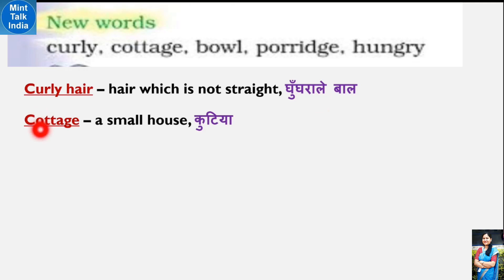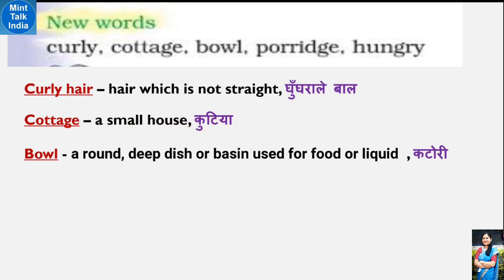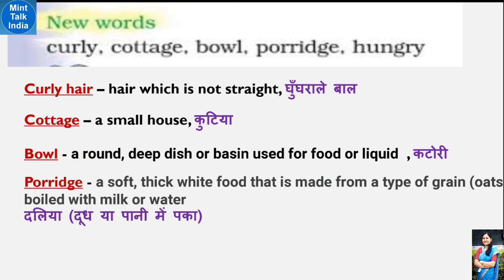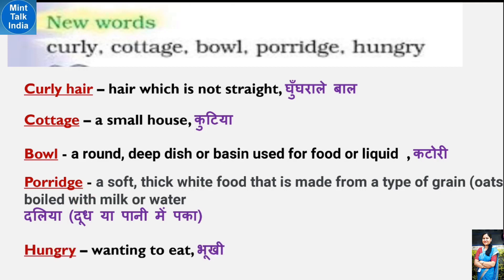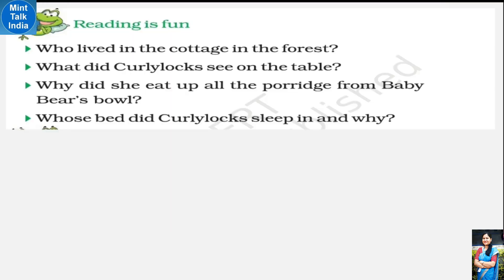Third word is 'bowl' - B-O-W-L. Bowl matlab katori. Uske baad hai 'porridge' - P-O-R-R-I-D-G-E. Porridge matlab halwa. Uske baad 'hungry' - H-U-N-G-R-Y. Hungry matlab bhooka hona.